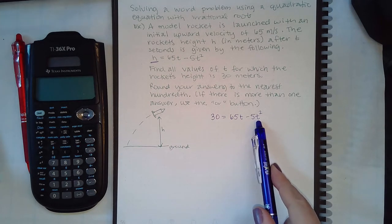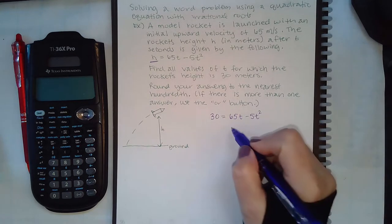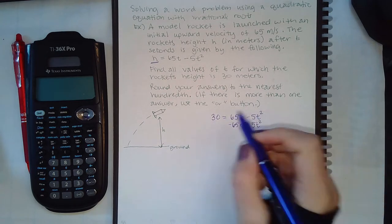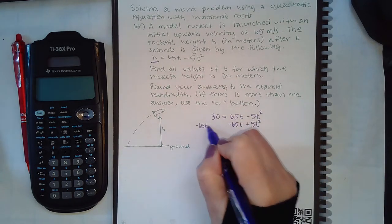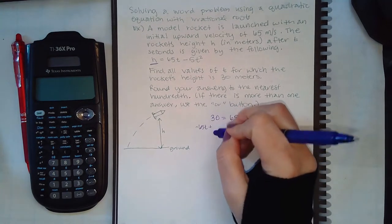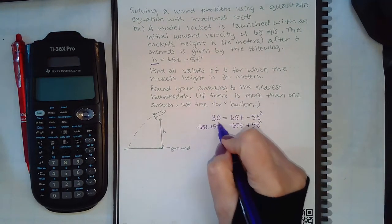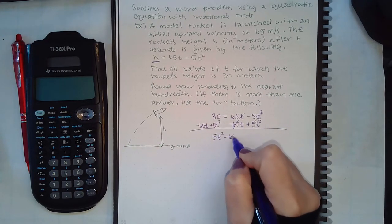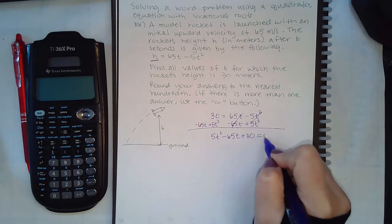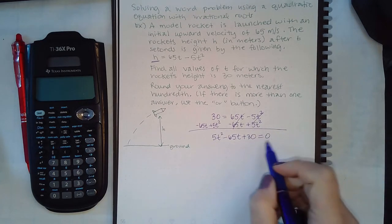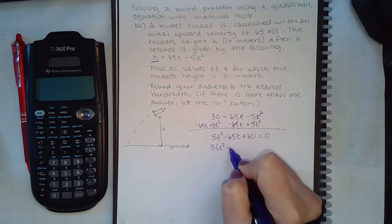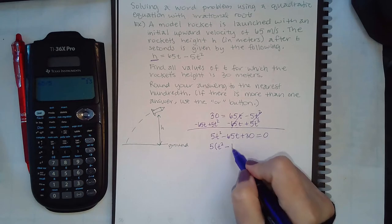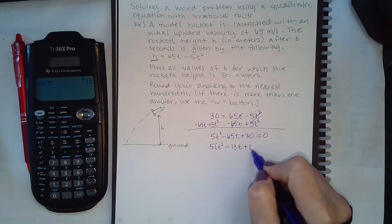Usually we like our t squared term to be positive before we factor, so we'll go ahead and move these two terms over to the left instead of moving the 30 to the right. So if I put these terms in order, I get 5t squared minus 65t plus 30 equal to 0. And then as I try to factor this, I can factor out the GCF of 5.